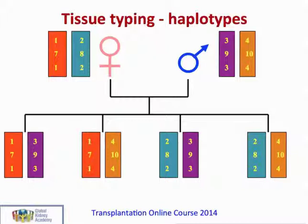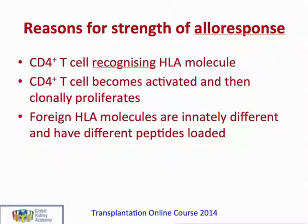It is for this reason that one in four siblings are haplotype identical in living donor transplantation. The allo response — that is, the immune response to allogeneic molecules — is dependent on CD4 T cells recognizing the HLA molecules. The CD4 T cell then becomes activated and clonally proliferates, expanding to form many copies of the same cell. Foreign HLA molecules are innately different because of the different genetic makeup between individuals, and look very different on the surface of cells because they bind different peptides.